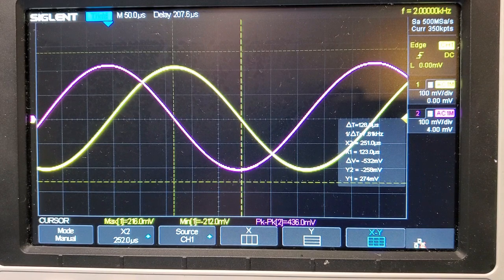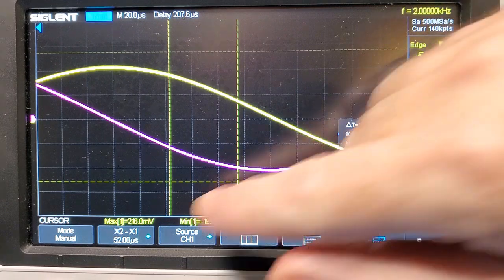Here we are at two kilohertz. Let's do the same thing: adjust X1 so it's at the crossing point there, now adjust X2. That's about as close as I can get it. Let's go back to X2 minus X1. You can see here it's 130 microseconds, which is off from the 125 microseconds which it should be. Let's zoom in a bit on that, hopefully we can get better accuracy.